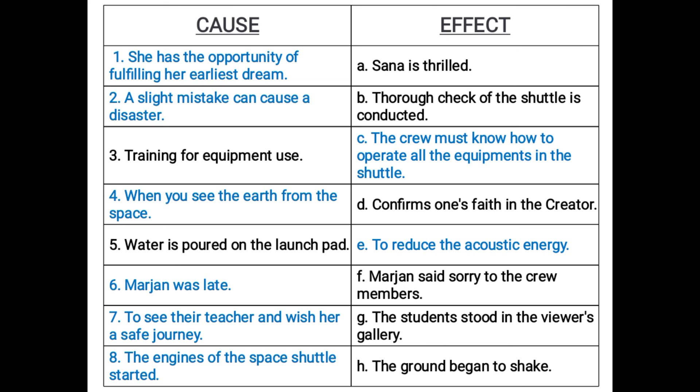Number seven: the students stood in the viewer's gallery. The reason why they were standing in the viewer's gallery was to see their teacher and wish her a safe journey. They were standing there just to wave their hands to their teacher, to say goodbye, to wish her a safe journey, and just to be with their teacher. And the last one: the ground began to shake because the engines of the space shuttle started. When it started to be launched into space, the ground started to shake.